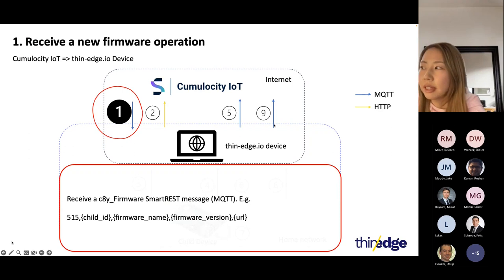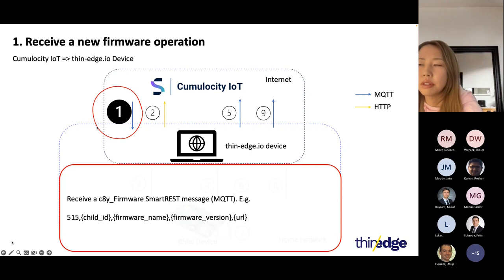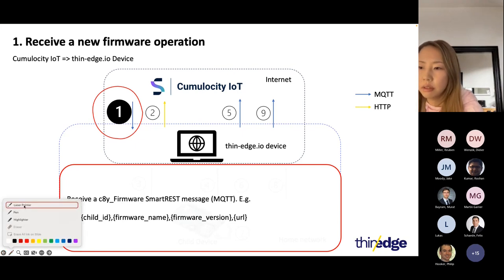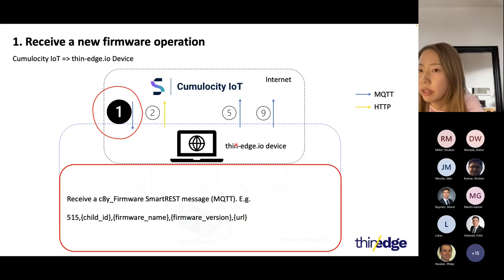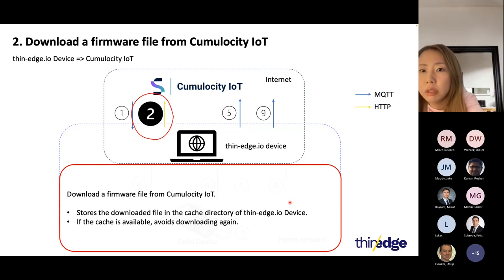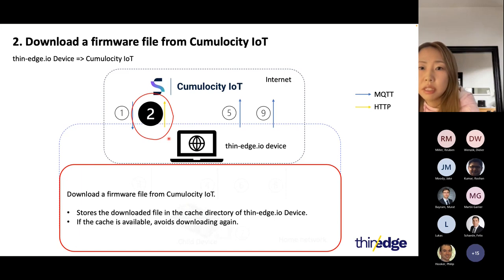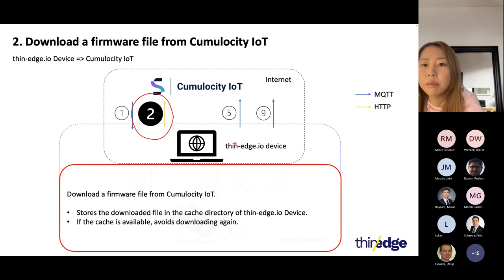There are nine steps. I'm going to explain from step one. When you create a new firmware operation in Cumulocity, Cumulocity publishes a new Smartrest message and the thin-edge device receives it. This is the payload of the Smartrest message — one notable field is the URL, which is the target firmware file's URL, somewhere available on the internet. Step two: the thin-edge device downloads the firmware file from Cumulocity or some external location. After downloading, the file is stored in the cache — this is a feature of the C8Y firmware plugin.